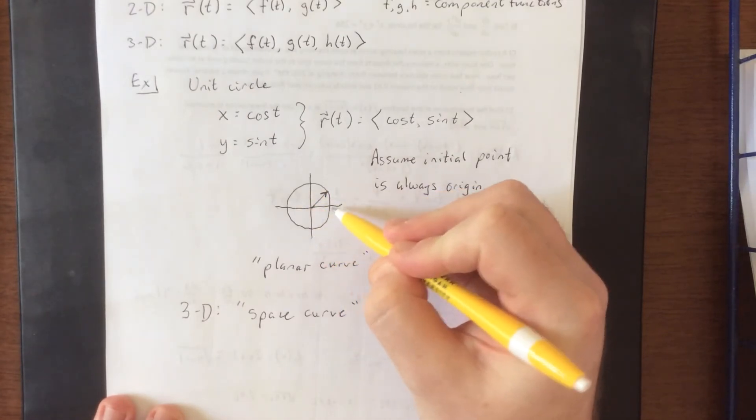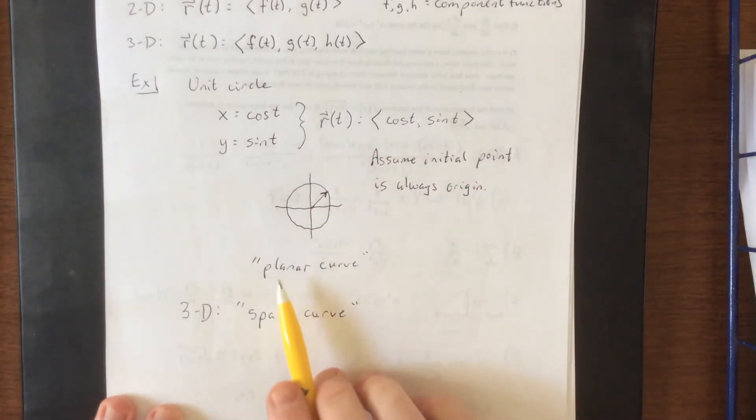A circle is a one-dimensional thing, though it does encompass an area. The circle itself is one-dimensional. When it exists in two dimensions, we call it a planar curve, because two dimensions would be a plane. In three dimensions, we would have a space, which is why we refer to it as a space curve, if we were to bump it up into three dimensions.